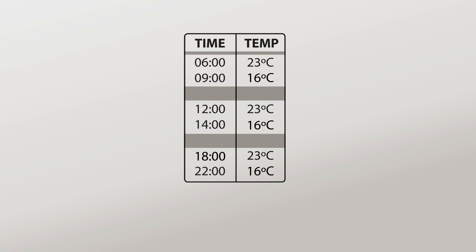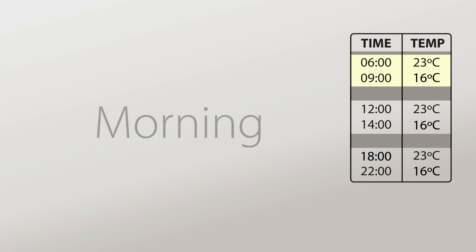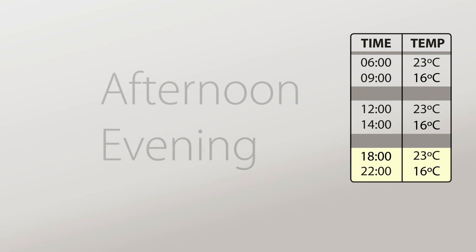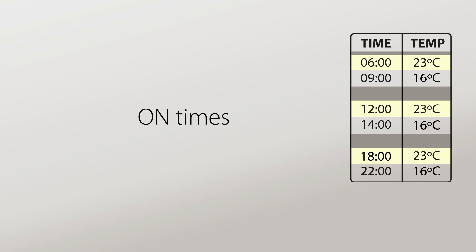The heating schedule is basically three events throughout the day. These are usually morning, lunchtime, and afternoon or evening. Each event has two programs. The first is the on time and temperature. The second is the off time and temperature.